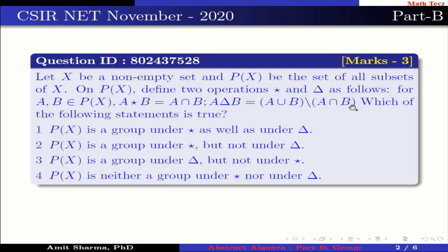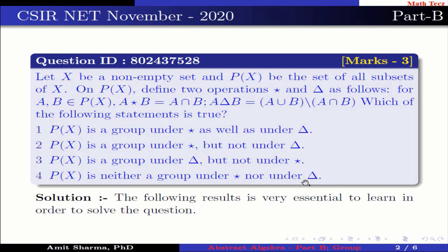Which of the following statements is true? Option 1: P(X) is a group under star as well as under delta. Option 2: P(X) is a group under star but not under delta. Option 3: P(X) is a group under delta but not under star. Option 4: P(X) is neither a group under star nor under delta.